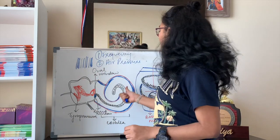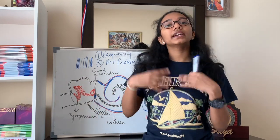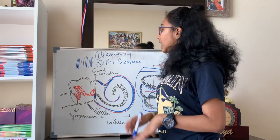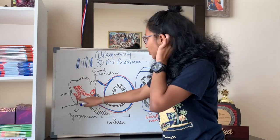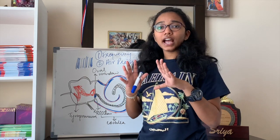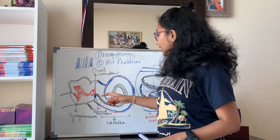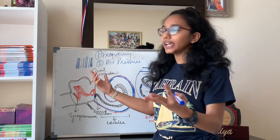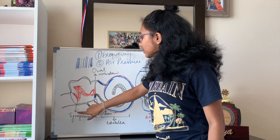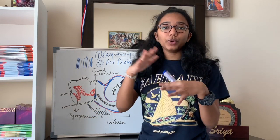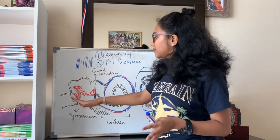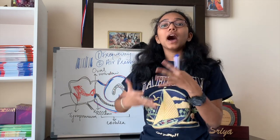From the tympanum, amplification of sound takes place. Amplification basically means increasing the intensity or loudness of the sound so the ear can interpret it better. The middle ear takes care of amplifying the sound. The eardrum's area is much greater than the area of the stapes — the smallest bone in the ear. The sound hits the tympanum, and the energy is transferred in the form of vibrations, which become higher in amplitude.